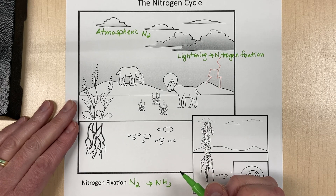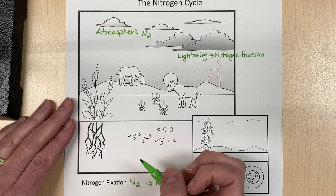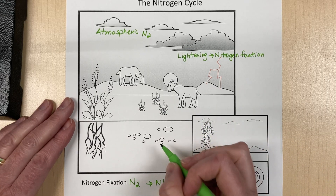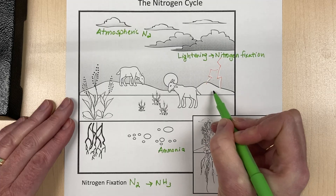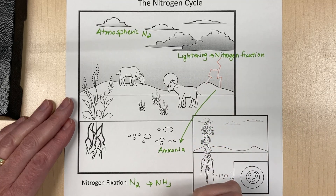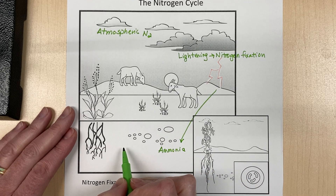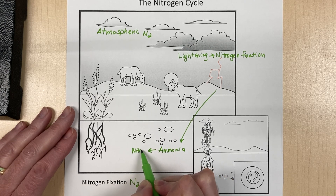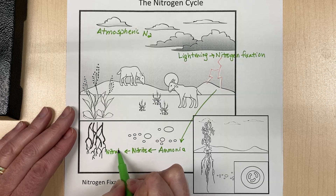We have nitrogen that comes from plants. Let's talk about ammonia. Nitrogen fixation creates ammonia for plants. Now, some plants like ammonia, but others do not. So we have ammonia turning into nitrites and turning into nitrates, because most plants prefer nitrates.